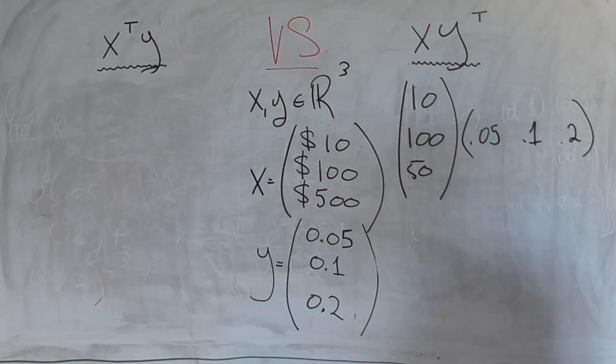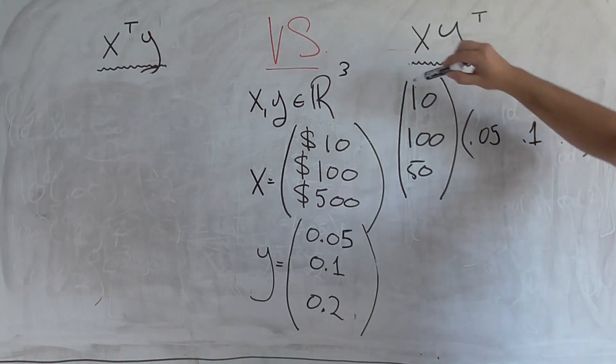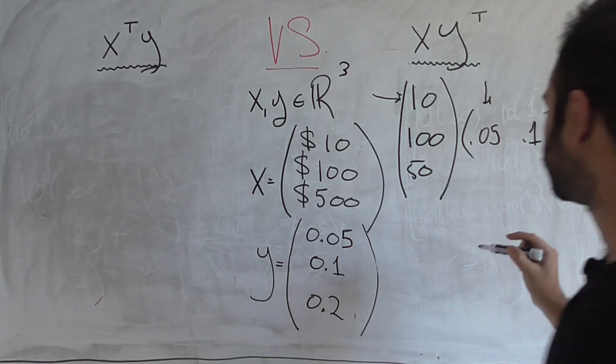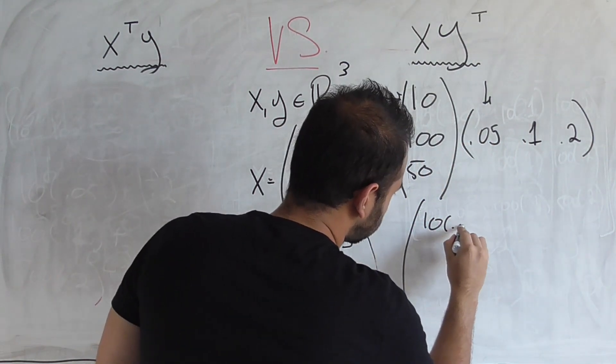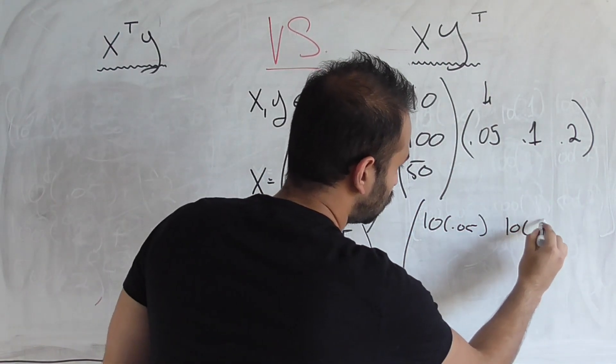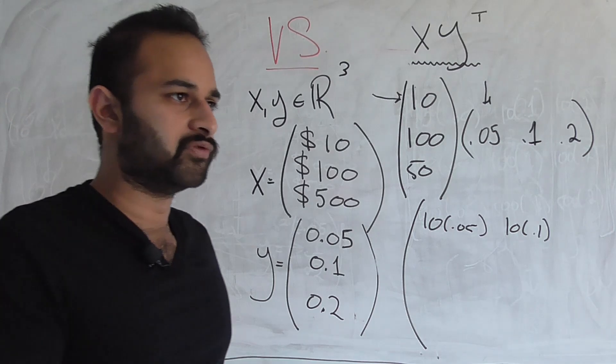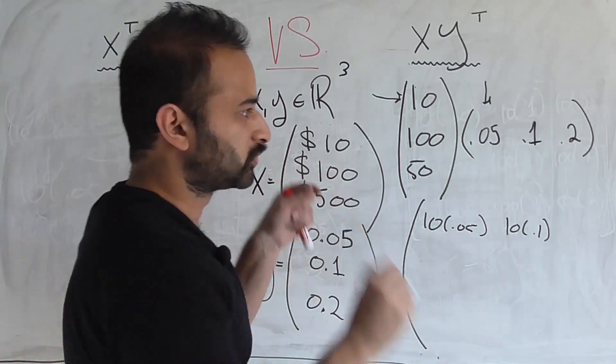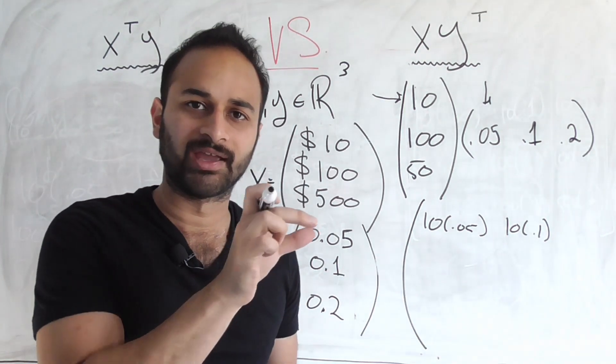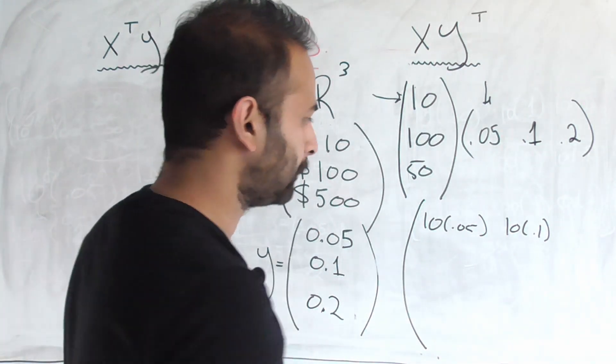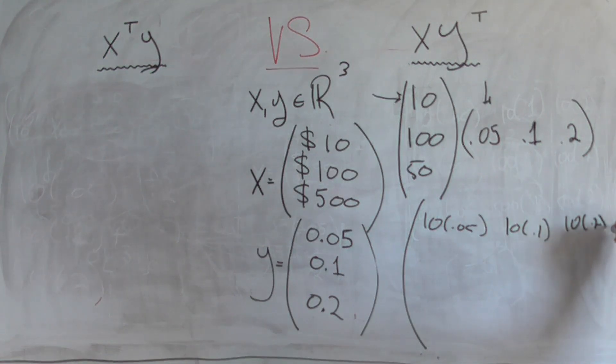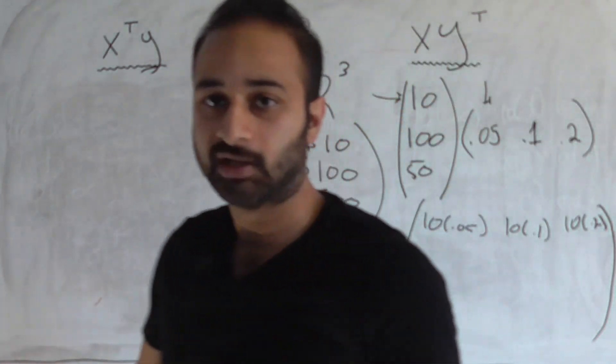So we go ahead and do this multiplication. In this case, each element is simply done by, we have 10, we multiply it by .05. So going down here, we get 10 times .05. Then we get 10 times .1. And if it's kind of unclear what's going on, go ahead and review your rules of vector multiplication, vector matrix multiplication, because in the end vectors are just matrices that happen to have a dimension of 1 somewhere. So 10 times .05, 10 times .1, 10 times .2.